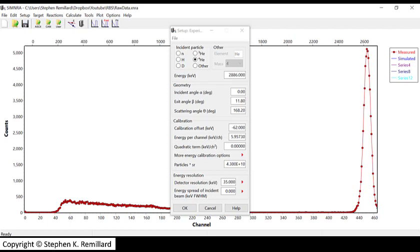Particle times steradian is the incoming particles times the solid angle subtended by the detector. That's going to be a free fit parameter in your analysis. Let's start off with 4 times 10 to the 10th, and we'll see where it goes from there. I never have to change the energy resolution. We have a detector of the resolution of 35 keV. Now, you can play around with this energy spread of the incident beam. We'll talk a little bit about how it might influence the spectrum later.